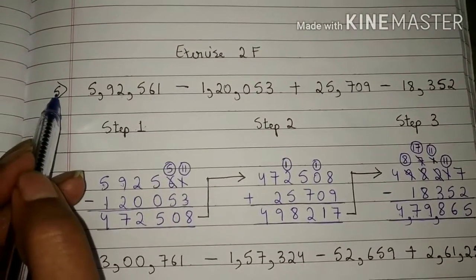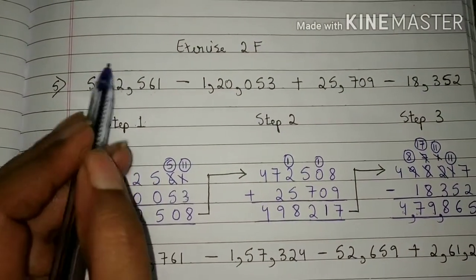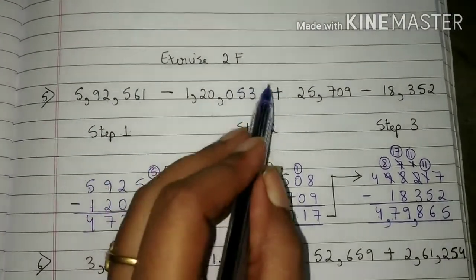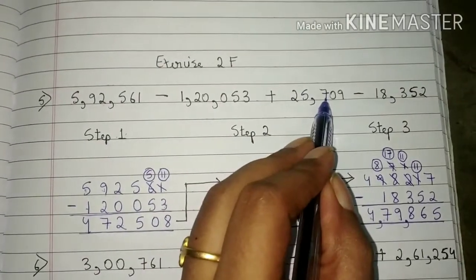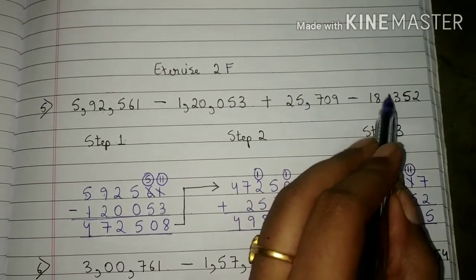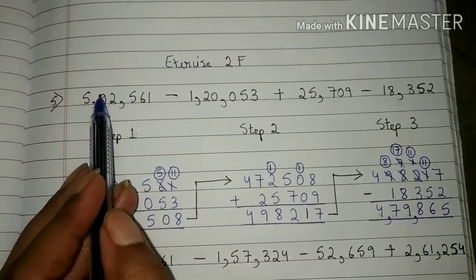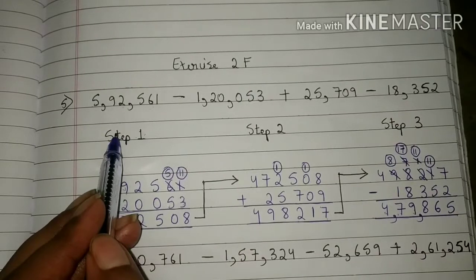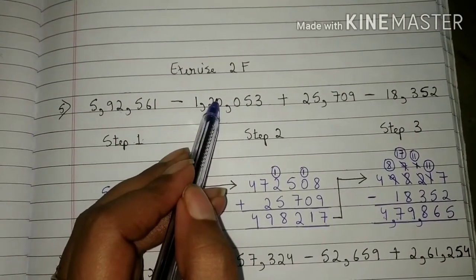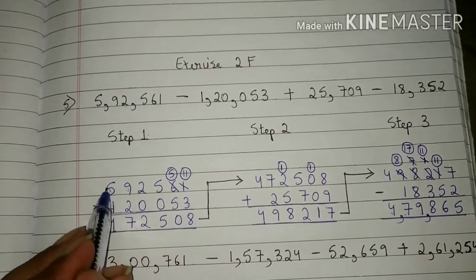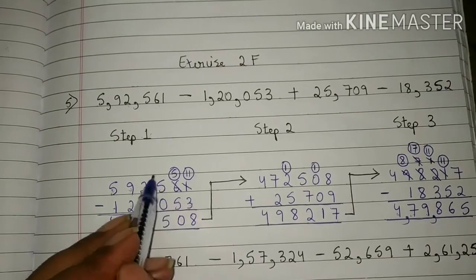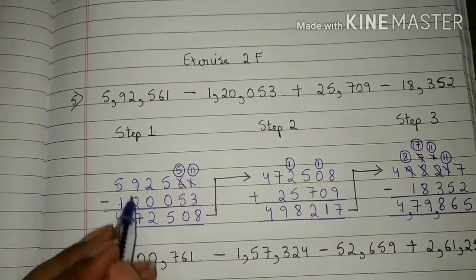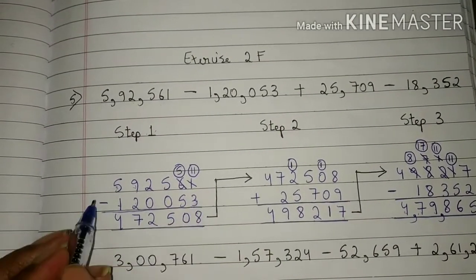Now come to question 5: 5,92,561 minus 1,20,053 minus 25,709 minus 18,352. We will solve this question in 3 steps. In step 1, we will do subtraction — we will subtract the first number and the second number. So we will write the first number, that is 5,92,561, here, and after that we will write the second number, that is 1,20,053, here. Now we will subtract the numbers.